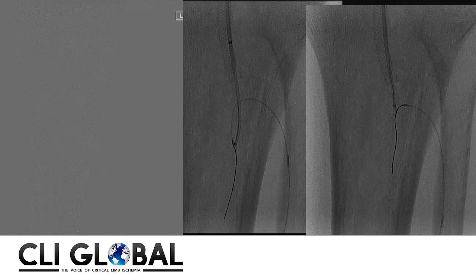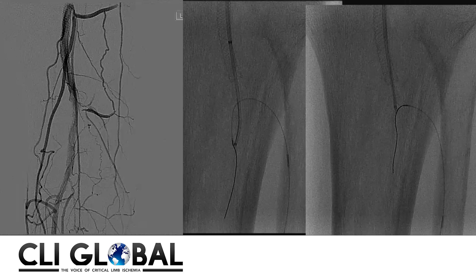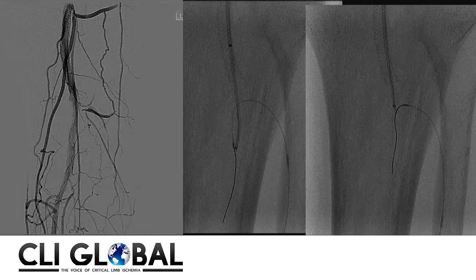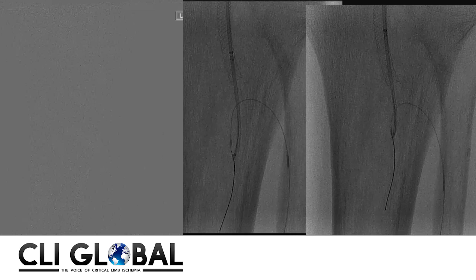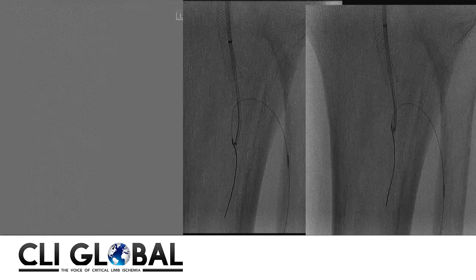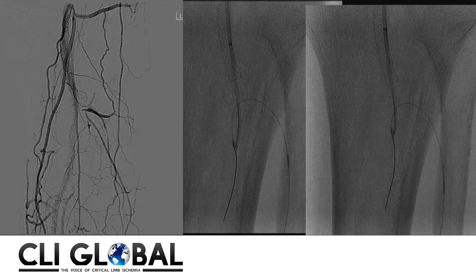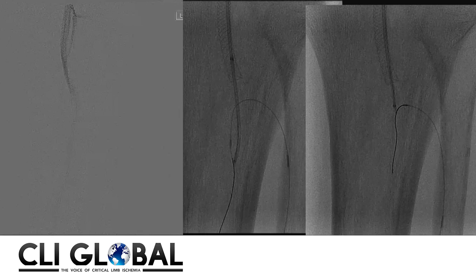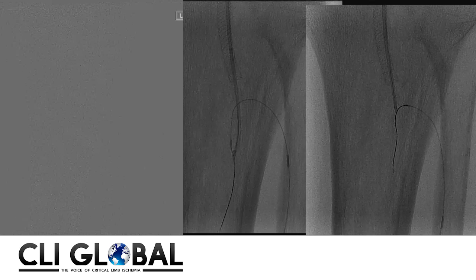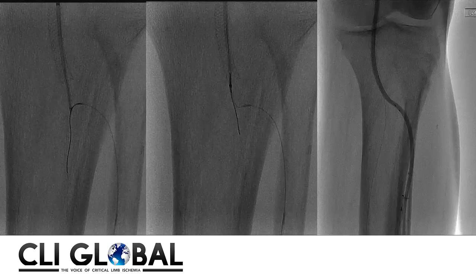We did not want to compromise the hard work achieved by re-establishing blood flow to the posterior tibial artery. In the middle panel, after crossing from the anterior tibial artery to the TPT and posterior tibial artery, we used a snare to capture the 014 wire — a Glide Advantage wire made by Terumo — and pulled it from the TPT trunk into the popliteal artery. This maneuver confirms crossing from the anterior tibial artery into the true lumen of the popliteal artery.